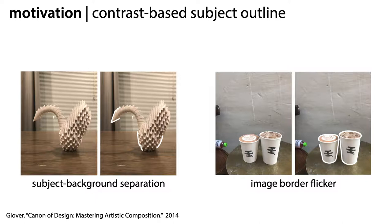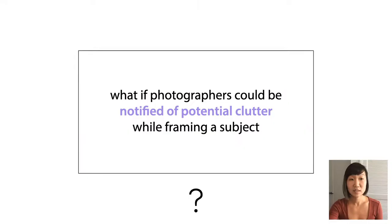Looking back at our earlier examples, here are the images with subjects outlined in this way. You may notice from the right image, this outlining method doesn't do anything to highlight image-border flicker.